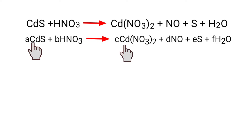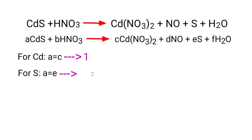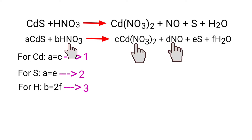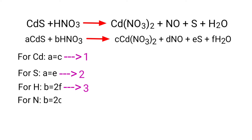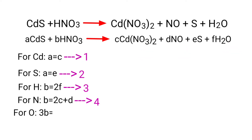For Cadmium: A = C. For Sulphur: A = E. For Hydrogen: B = 2F. For Nitrogen: B = 2C + D. For Oxygen: 3B = 6C + D + F.